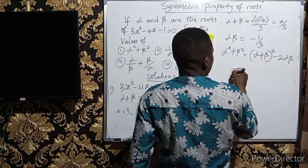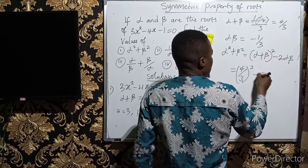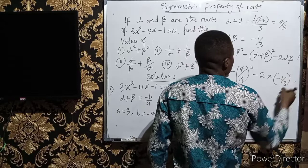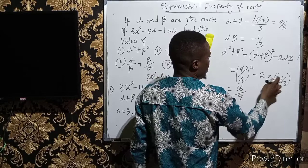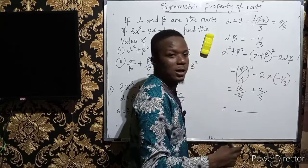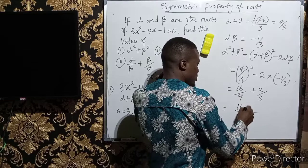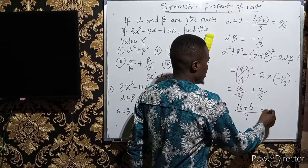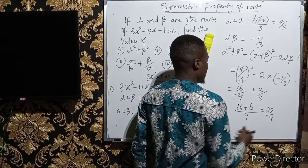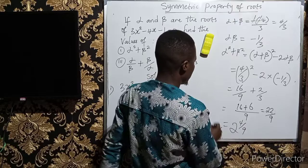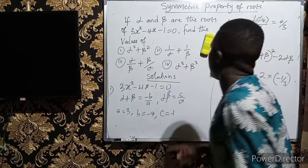Alpha plus beta is 4 over 3, so we write 4 over 3 all squared, minus 2 times alpha beta which is minus 1 over 3. That gives us 16 over 9, minus 2 times minus 1 over 3, which is minus 2 over 3. The LCM is 9, so 16 over 9 plus 6 over 9 gives us 22 over 9, which can also be written as 2 and 4 over 9. That is the value of alpha squared plus beta squared.